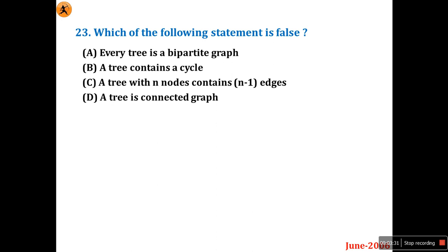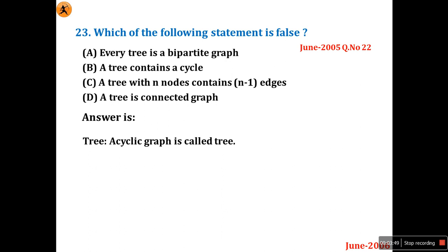Question 23: which of the following statements is false? A) Every tree is a bipartite graph. B) A tree contains a cycle. C) A tree with N nodes contains N minus one edges. D) A tree is a connected graph. This is a repeated question from June 2005, question number 22. Every tree is a bipartite graph — yes, this is true, because the root node connects with children: root node in set A, children in set B, which satisfies bipartite conditions. A tree contains a cycle — this is false, because an acyclic graph is called a tree.